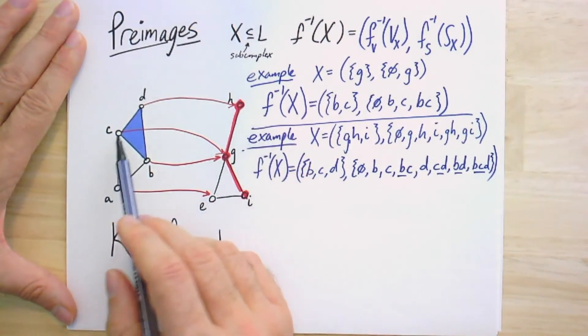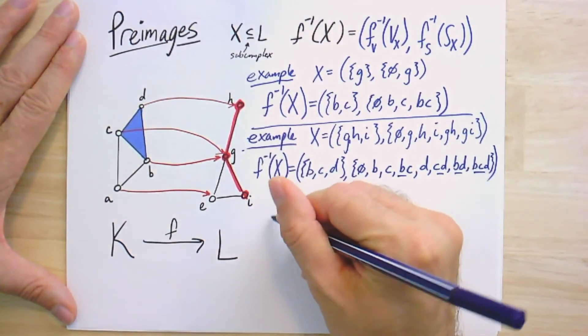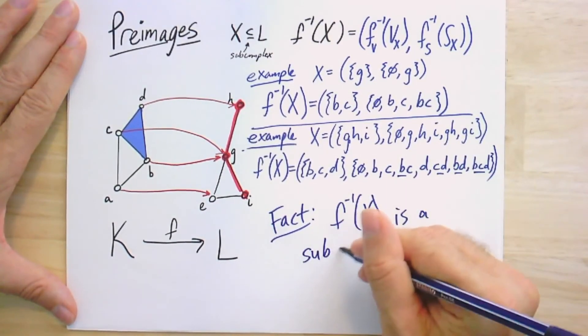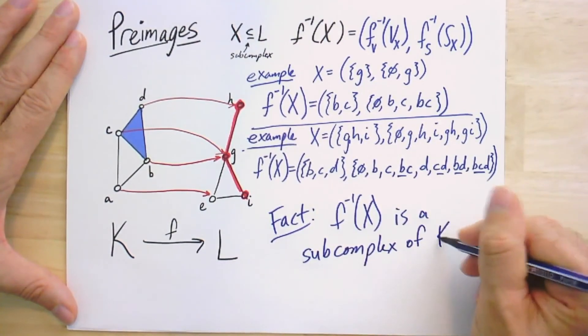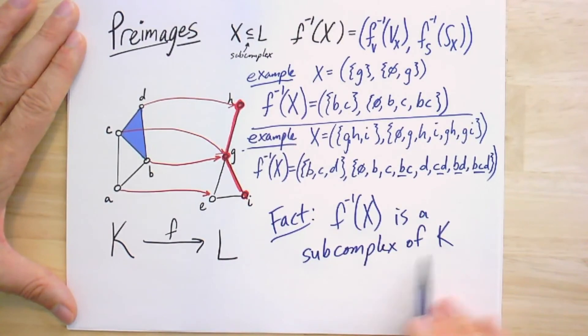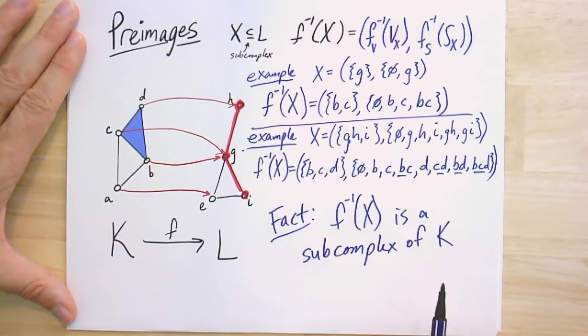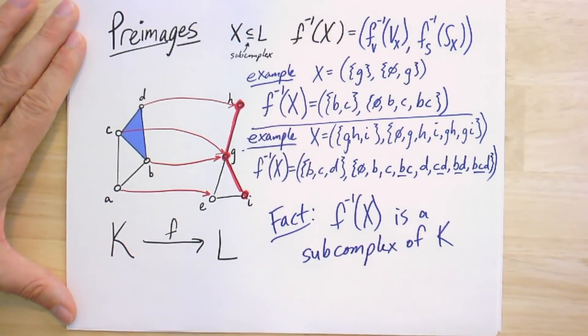The pre-image of this path is a subcomplex, F-inverse of X, and it is a fact that F-inverse of X is a subcomplex of K — a subset of the vertices, a subset of the simplices, and it is itself a simplicial complex satisfying the definition that the simplex set is a subset of the power set of the vertices and is closed under taking subsets. That is images and pre-images of simplicial maps. In the next video we'll jump into a special case called contractions — stay tuned.